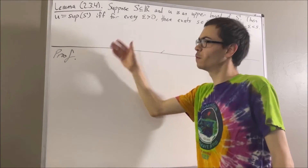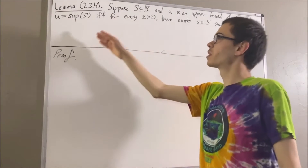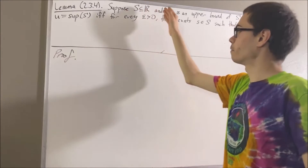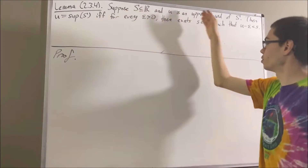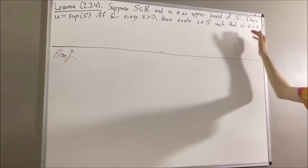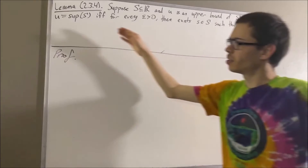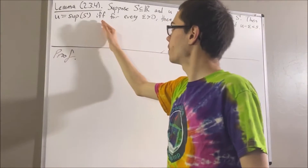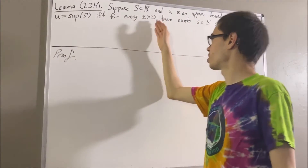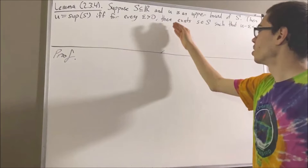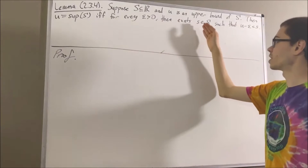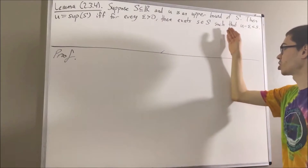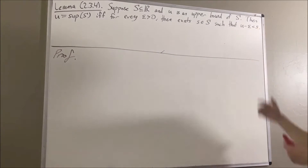In this video, we are going to prove the following lemma. Suppose s is a subset of real numbers and u is an upper bound of s. Then u is the supremum of s if and only if, for every epsilon greater than 0, there exists an element s in S such that u minus epsilon is less than s.